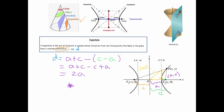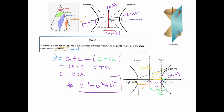We define b² such that c² = a² + b², forming an important Pythagorean identity. The value b also gives us the coordinates of the points on the conjugate axis, which allows us to construct that rectangle and sketch a good hyperbola.